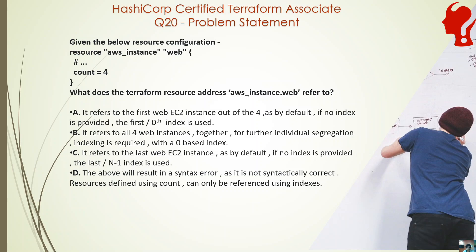If we do not give any sub-segregation or index like 0, 1, 2, 3, it will always refer to the entire group of instances — all four instances. If you want to refer to an individual EC2, for example to get the public IP or private IP of the third EC2 instance, you should do aws_instance.web[3].public_ip or private_ip. This is how resource addressing works, and this is something you need to know for the exam.